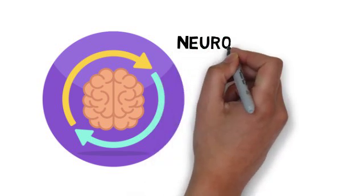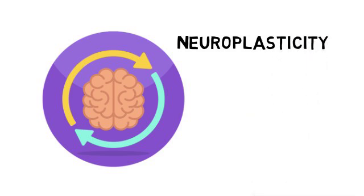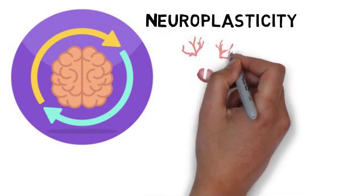The brain's ability to change and adapt, known as neuroplasticity, allows it to reorganize itself by forming new connections and modifying existing ones in response to experiences, learning, and injury.